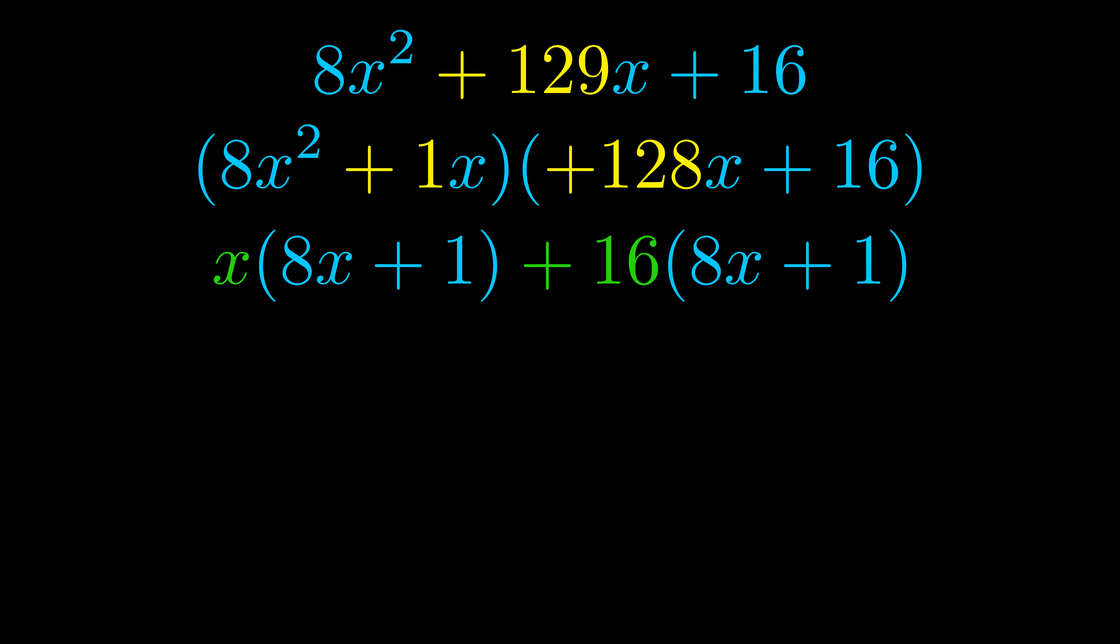Notice also how what remains inside the parentheses is the same in both cases. The blue values are the same. Those blue values will become one of our factors, and we will combine the two green values, the GCFs that we pulled out, to get the other one.